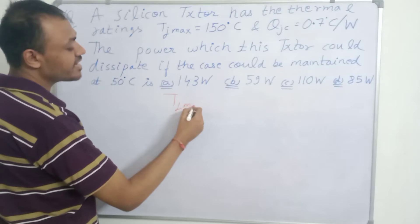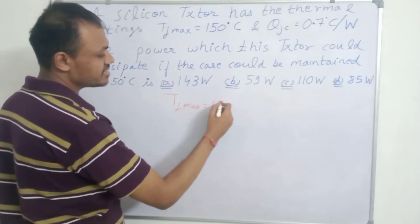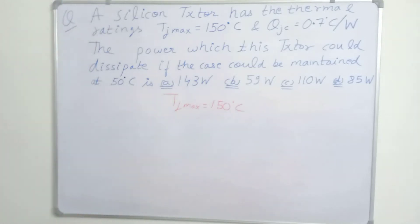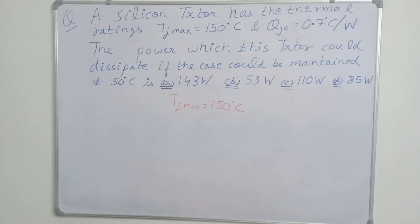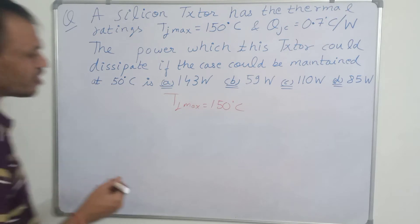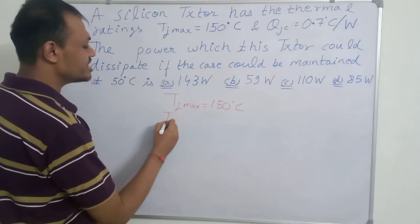TJmax is 150 degree Celsius and this theta JC, it is given as 0.7 degree Celsius per watt, so it is nothing but thermal resistance.